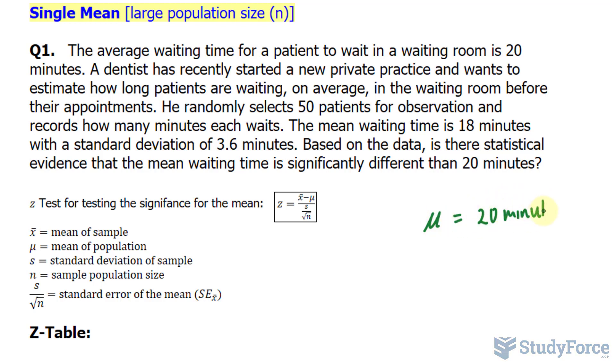Whenever we want to show the population's average, we use this letter. Whereas, if we want to show the mean of a sample, we use x̄. And in that case, it's the study that this dentist did for the 50 patients. And he found that the mean wait time was 18 minutes.